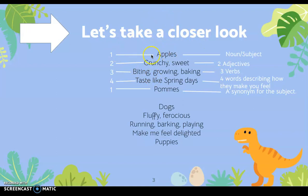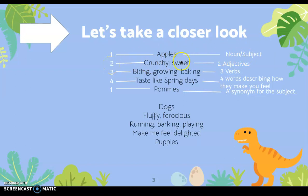The first line has one word in it, and that is the noun or subject of the cinquain. The second line has two words and they are adjectives — so crunchy and sweet are two adjectives.